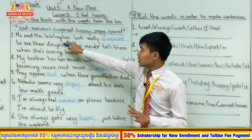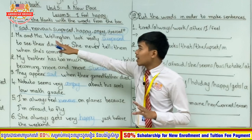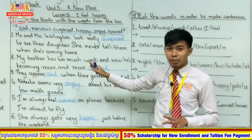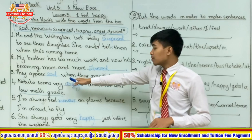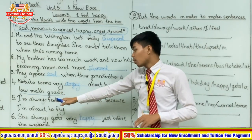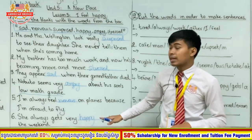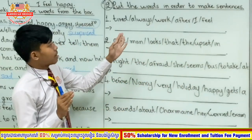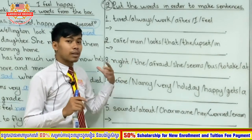Let's read all the answers again. Number one: Mr. and Mrs. Wellington look really surprised to see their daughter — she never tells them when she's coming home. Number two: my brother has too much work and now he's becoming more and more stressed. Number three: they appear sad when their grandfather died. Number four: Nobuto seems very angry about his son's low math grade. Number five: I always feel nervous on planes because I'm afraid to fly. Number six: she always gets very happy just before the weekend. Now let's go to exercise two: put the words in order to make sentences.